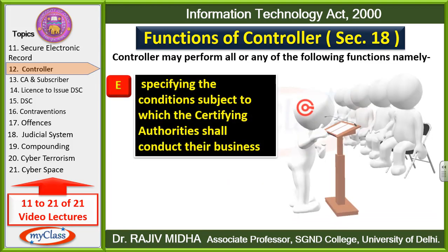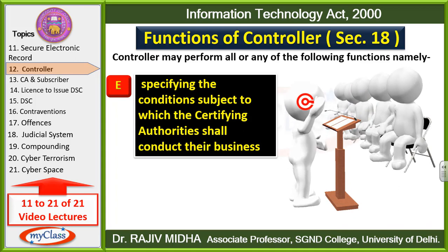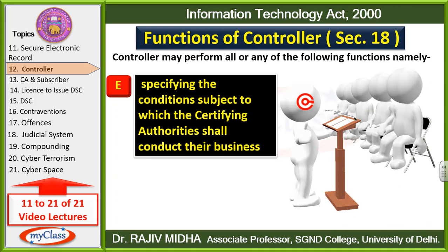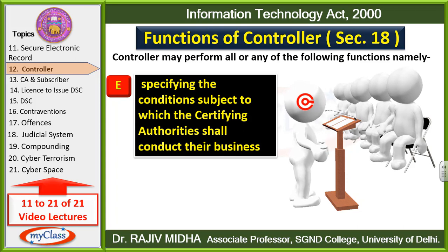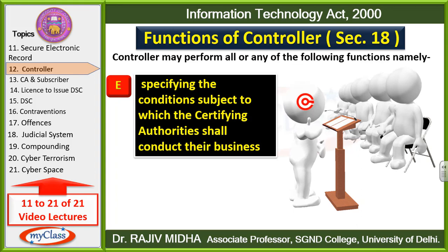E point: Specifying the conditions subject to which certifying authorities shall conduct their business. Certifying authorities apne kaam ko kaise karengi, kin-kin conditions ko unko follow karna hai — controller yeh saari conditions certifying authorities ko bataega.